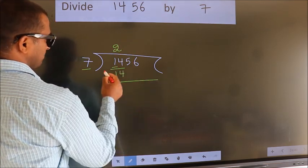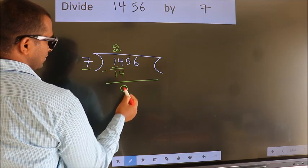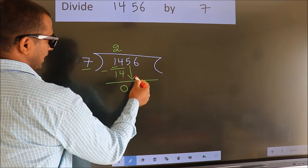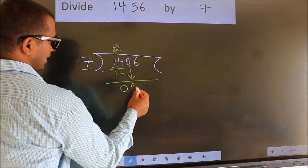Now we should subtract. We get 0. After this, bring down the beside number. So 5 down.